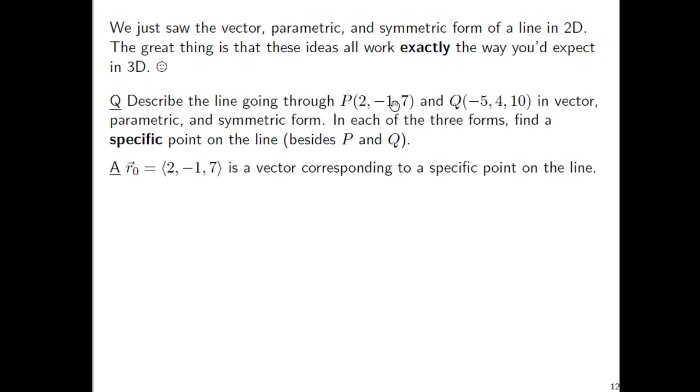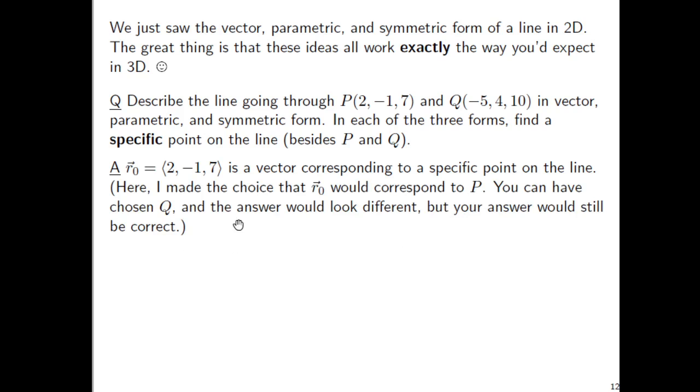So first of all, we need to pick one of the points to serve as sort of the fixed point and create the vector form. And I just went with the point P here. So turn this point into vector format, and that will be the fixed vector. You could have chosen Q. The answer would look a little different, but in the end, it would still also technically be a correct answer.